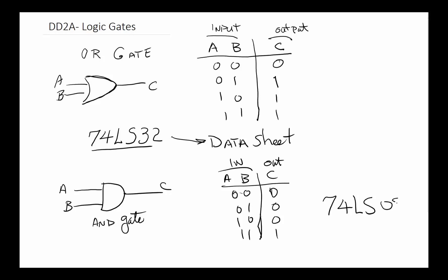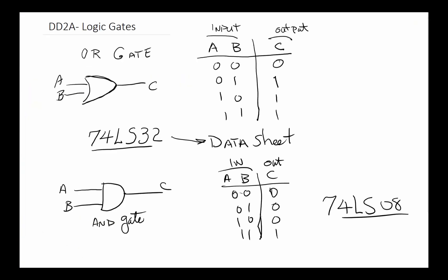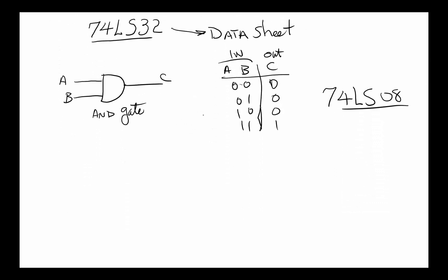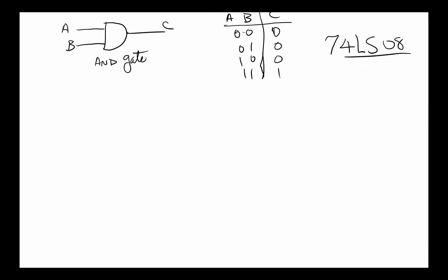The part number for this one is 74LS08. If you wanted to see more of it, you can simply go back to the data sheet we had earlier at engrcs.com and look at the detailed specification. It's going to be very similar to what you saw with 74LS32 or the OR gate. There's four of them in that package as well.